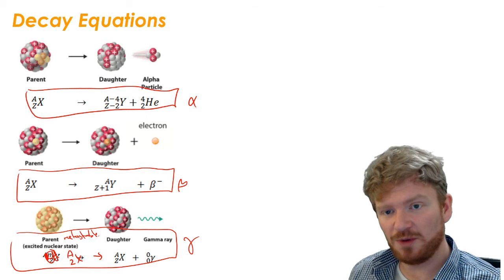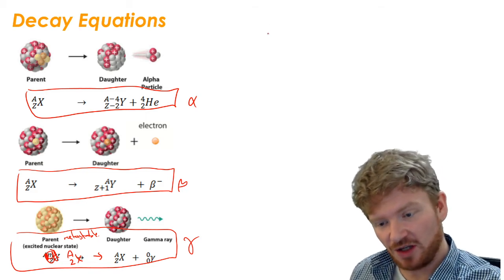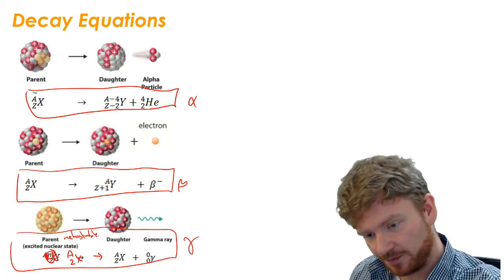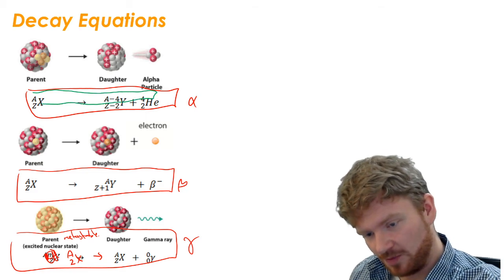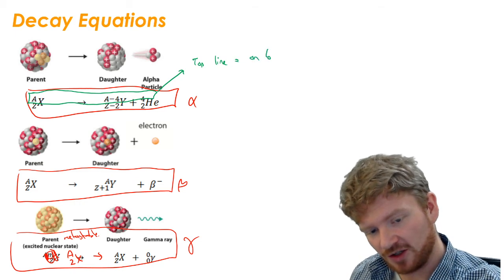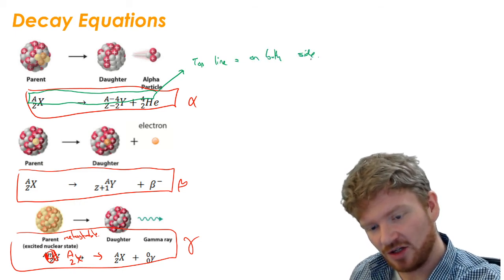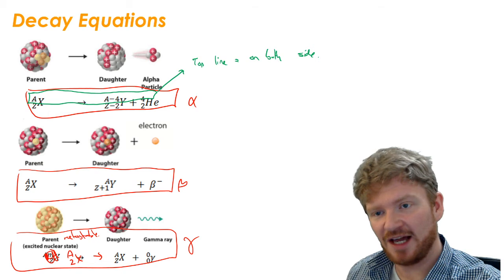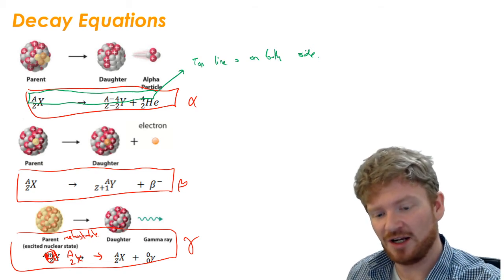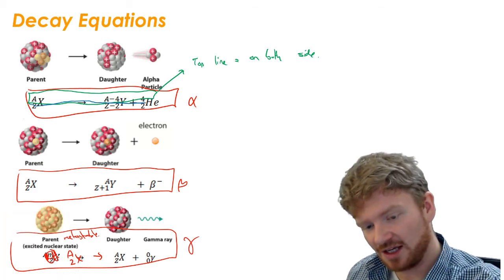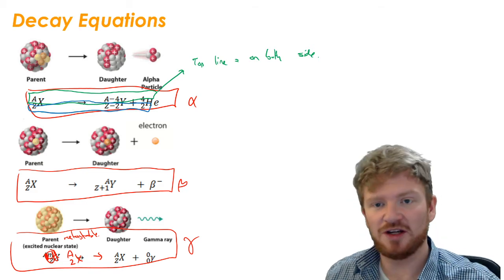So what should be pretty obvious to you is that in all of these, the idea, and let me just change colour. In all these equations, just very similar to a chemistry equation, all the top line must be equal on both sides. So we need, during our decay equation, whatever's on the left-hand side, if I add up all of the A's, I must get the same on the right-hand side. And the same thing on the bottom. All of the Z numbers, they have to add up to be the same on both sides of the equation.